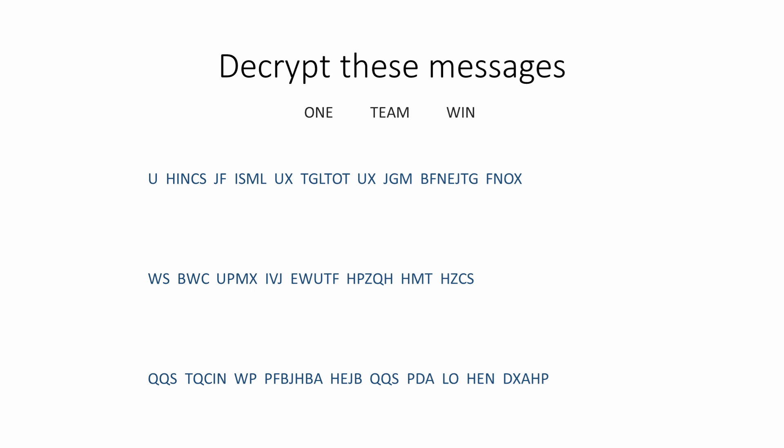Here are some messages you can try to decrypt yourself, but there's a clue: each message has been encrypted using one of the keywords — 'one', 'team', and 'win'. But which is which? Pause now to give them a try, and I'll show you the solutions when you resume playing.